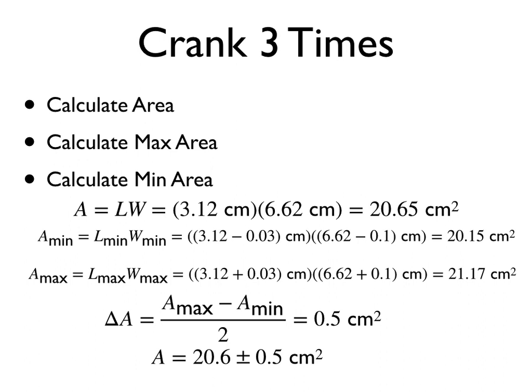So the crank number one is to calculate the area. Crank number two is to calculate the maximum area. Crank number three is to calculate the minimum area. So from the maximum area, I can find the uncertainty. So if you look right here, the first thing I do is calculate the area, length times width. Just ignore the uncertainty. Just calculate the area, and I get 20.65. Next, I'm going to calculate minimum or maximum, doesn't matter which you do first. The minimum area, I'm going to use whatever values of my calculation give me the minimum area. In this case, it would be the minimum length and the minimum width. So I'm going to take the minimum length is 3.12 minus the uncertainty of 0.03, and the minimum width is 6.62 minus its uncertainty. And when I do that, I get a smaller area.